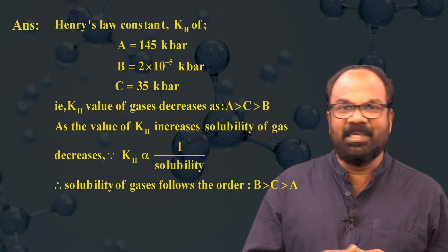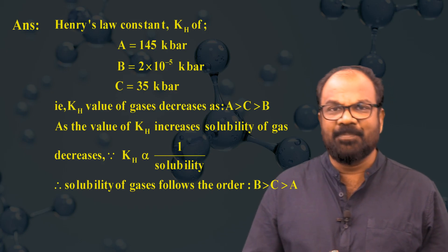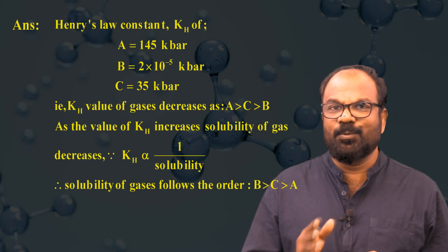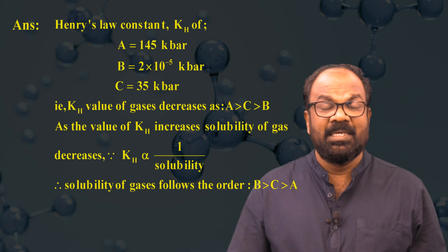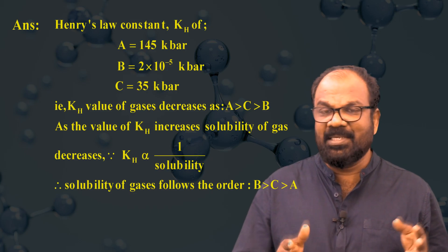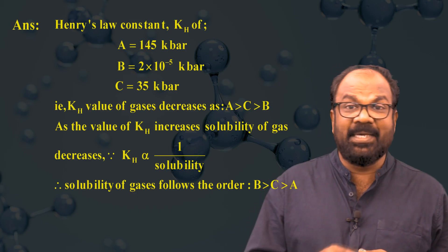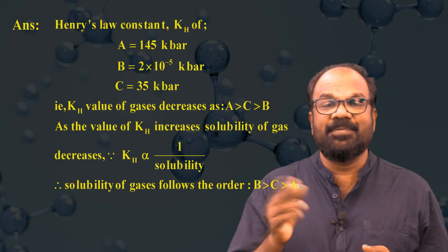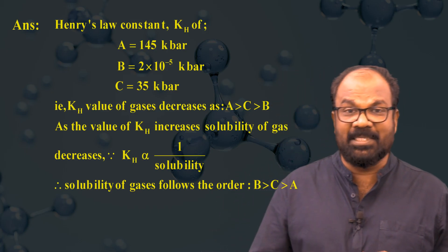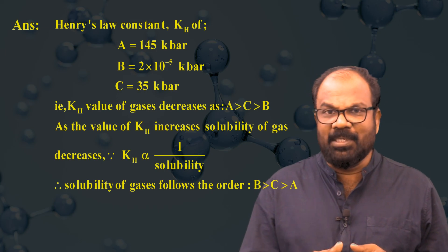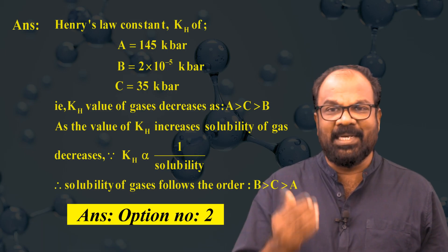The Henry's Law constants are: KH for A = 145 kilobar, for B = 2×10⁻⁵ kilobar, and for C = 35 kilobar. The KH values decrease in the order A > C > B. Since KH is inversely proportional to the solubility of a gas, as KH increases solubility decreases. Therefore, solubility follows the order B > C > A. The answer is option number two.